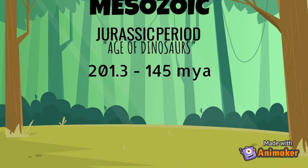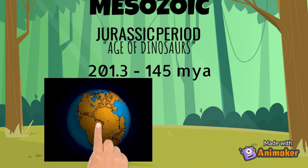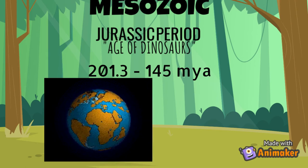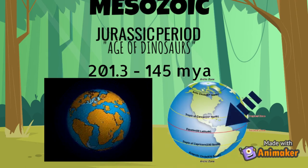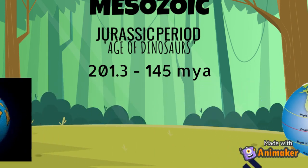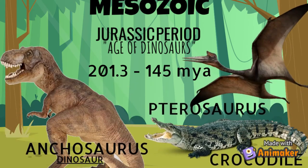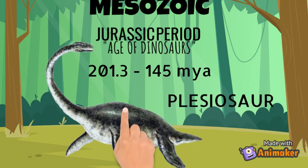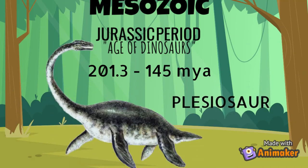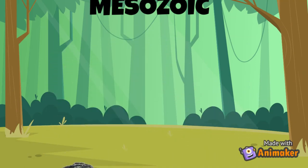The Jurassic period extends from 201.3 to 145 million years ago. During this time, Pangea was breaking up, though the continents were still close together. Analyses suggest that an expanded tropical zone was apparent. Archosaurs and pterosaurs were dominant. Cartilaginous and bony fishes were abundant, and large fishes and marine reptiles were also common. Jurassic plesiosaurs are some of the largest carnivorous reptiles ever discovered.